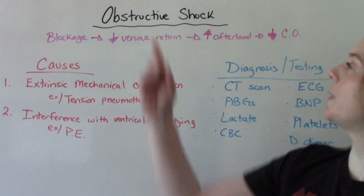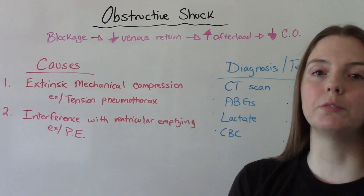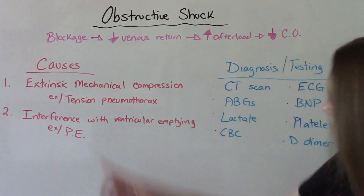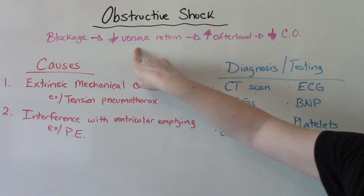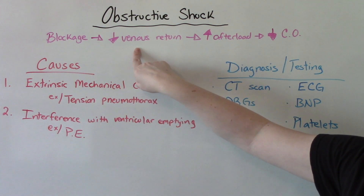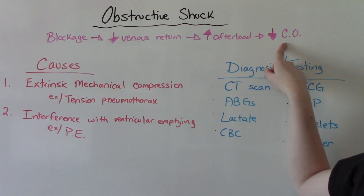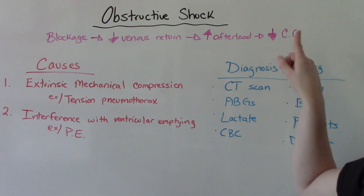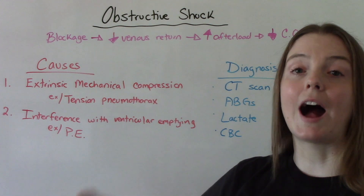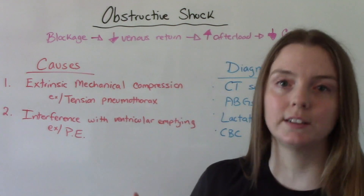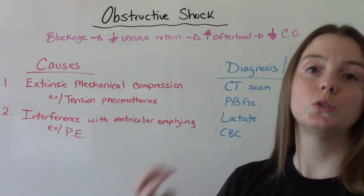As you can probably guess by the word obstructive, we're talking about shock that is caused by some sort of blockage. Some sort of blockage occurs which ends up decreasing the amount of venous return we have, which increases the afterload of the heart, which decreases our cardiac output. When we have low cardiac output, we have low blood flow and therefore low oxygen being distributed to our tissues and our organs. That's what shock is — when we're not getting enough blood flow and oxygen to our vital organs.